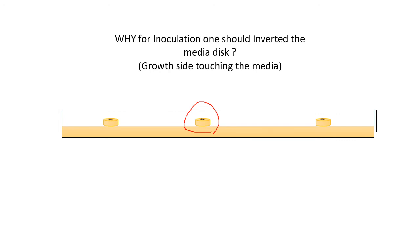Why must you invert the disc? The growth should touch the media. If you keep the disc without inverting, the fungal colony is only in contact with that particular agar block. It will grow only until the nutrients from that block are exhausted. Once nutrients are lost, the colony will not grow further. To avoid that, invert the disc so the growth touches the new media surface, giving access to fresh nutrients.